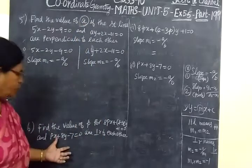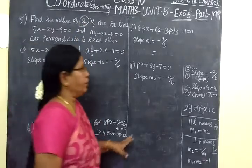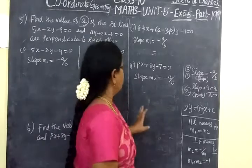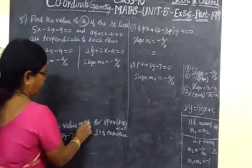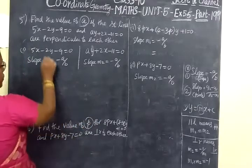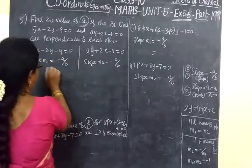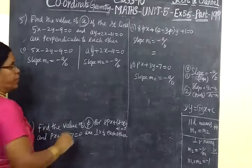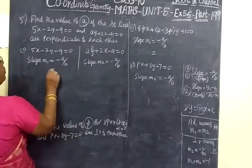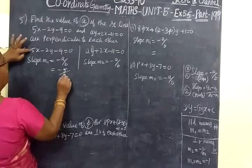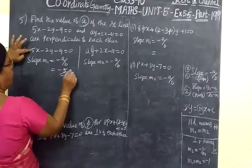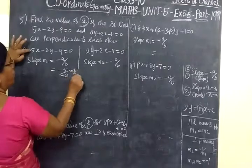In the next question, we are given 2 straight lines that are also perpendicular to each other, and we have to find the value of B. For that, first equation, second equation, slope formula: minus A by B. So minus A is 5 by B value minus 2. So minus minus cancels, giving 5 by 2.